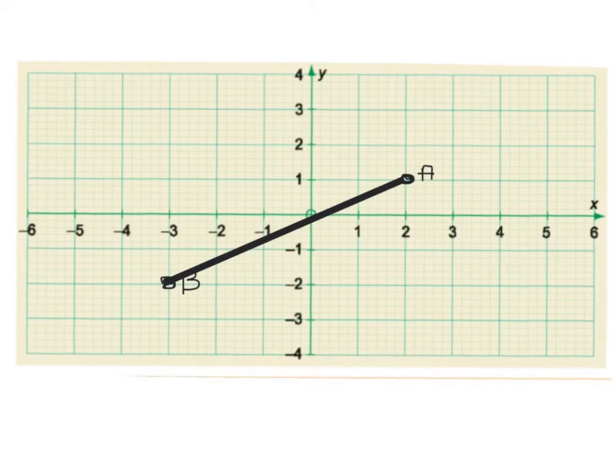If we're using rise over run, we pick two clear points. So on line AB is the point (-3, -2) and also the point (2, 1). So how much do I rise by?